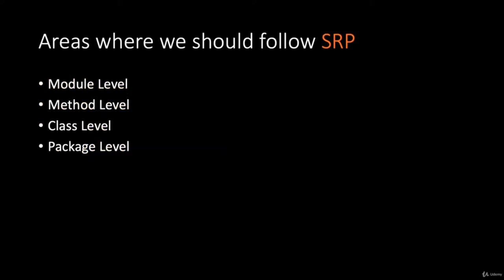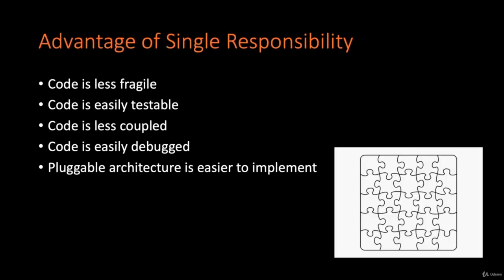SRP is not only applicable at the class and method level — you can also apply it at the package or module level. Always remember: responsibilities can be big or small, but there should be only one. Advantages of SRP: your code will be less fragile, easier to test, your dependencies will be loosely coupled, and code will be easy to debug. The most important advantage is that you can implement a pluggable architecture — SRP allows you to build code like a plugin-based model where you can swap out any dependency and everything works as expected.